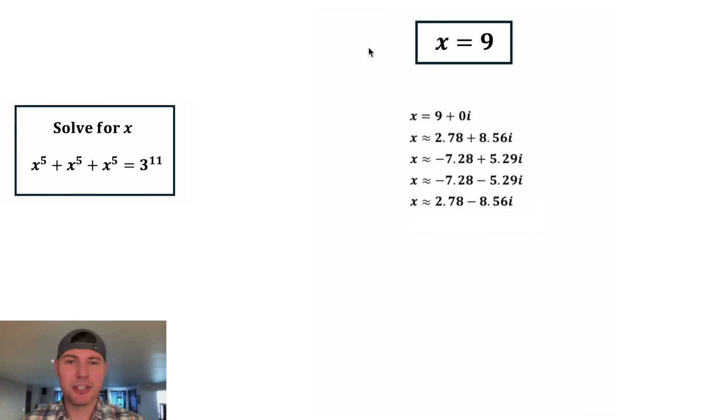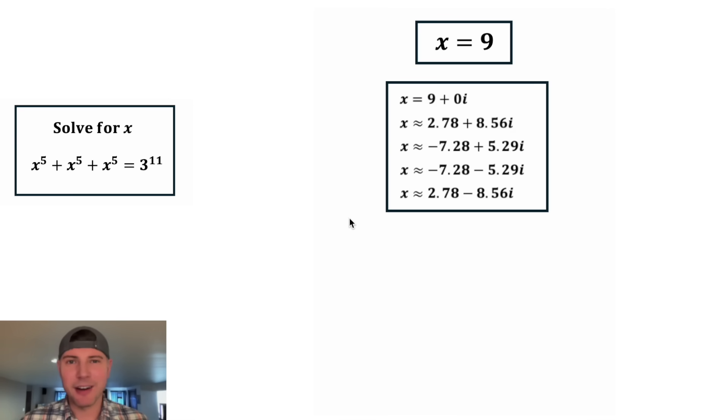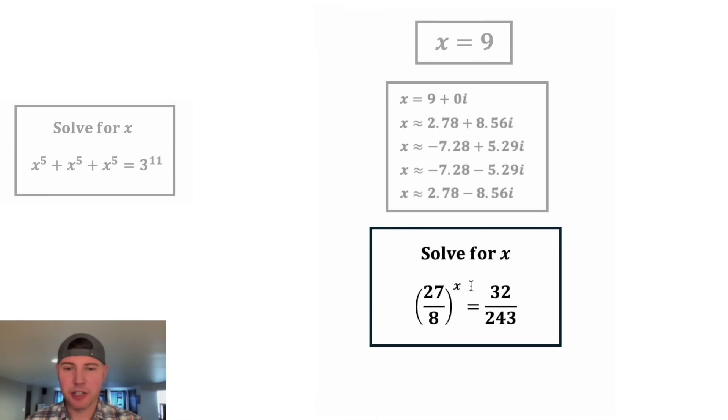These are the five solutions to this problem. Let's put a box around it. How exciting. And here's tomorrow's question: 27 over 8 to the x power equals 32 over 243. This looks like a fun one. How exciting.